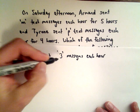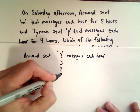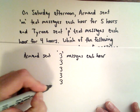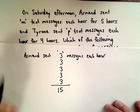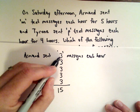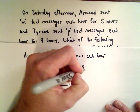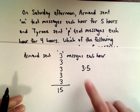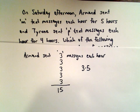He did that for 5 hours total, so he sent 3, plus another 3, plus another 3, plus another 3, plus another 3, for a total of 15 messages. The way that we got that is we would say he sent 3 messages multiplied by 5 hours, so 3 times 5 gives us 15.